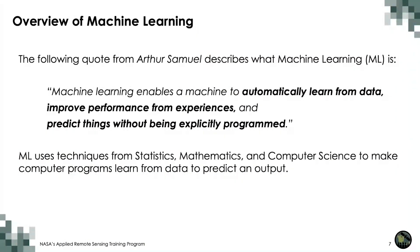In 1959, Arthur Samuel introduced the concept of machine learning with the following quote: machine learning enables a machine to automatically learn from data, improve performance from experiences, and predict things without being explicitly programmed. Machine learning can be understood as computational methods that use experience to improve performance or make accurate predictions — where experience refers to past information or data available to us. As with any computational exercise, the quality and amount of data will be crucial to the accuracy of predictions.